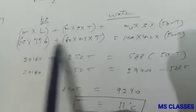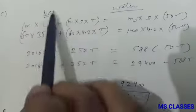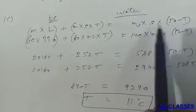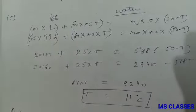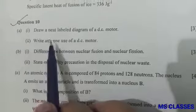Part (c): Let's see how to find the final temperature. m into L plus m·s·delta T for ice equals m into s into 50 minus T for water. So from here we get temperature as 11 degrees Celsius.